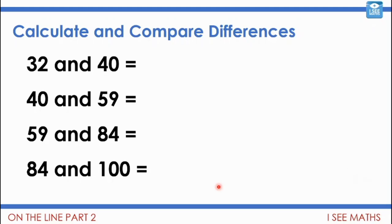Well for me the ones I could work out straight away really were the difference between 32 and 40, I just did one jump of eight. 40 and 59, again I just thought well one more 10 and nine more ones.